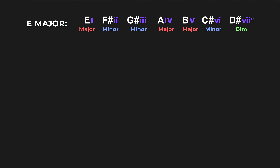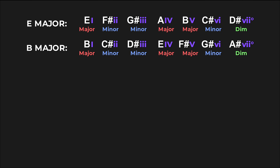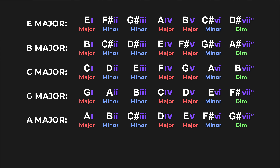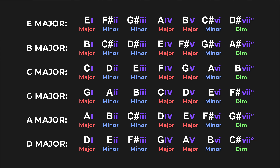So along with E major, the keys of B major, C major, G major, A major, and D major all have naturally occurring B and E notes in their scales.